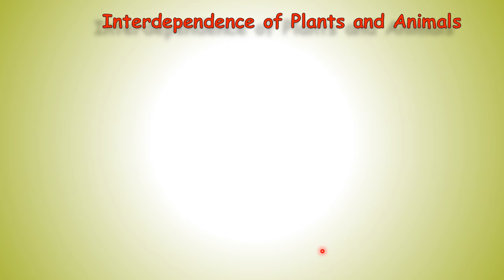Do you know our nature is made up of living and non-living things? Man, plants, animals, and microorganisms form the living part of nature, and soil, rocks, minerals, light, and water form the non-living part of nature. We all are dependent on each other for our survival. Here we will talk about how plants are dependent on animals and how animals are dependent on plants.